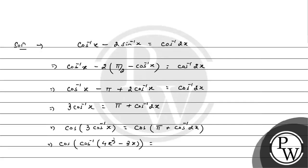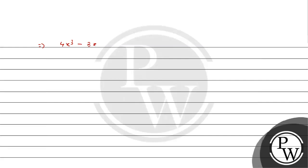This becomes 4x³ - 3x = -2x, which gives 4x³ - x = 0. Taking x as common, we get x(4x² - 1) = 0.